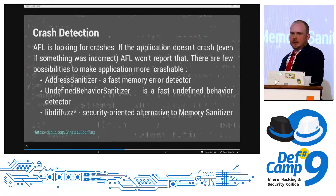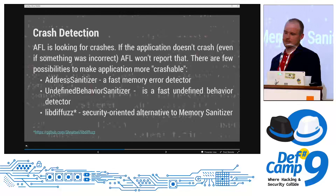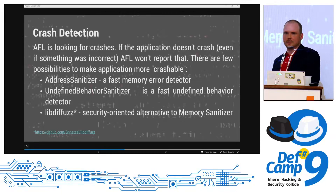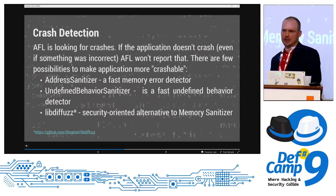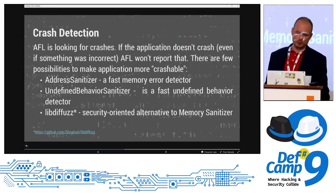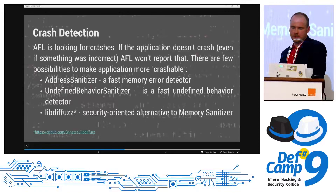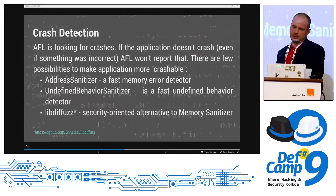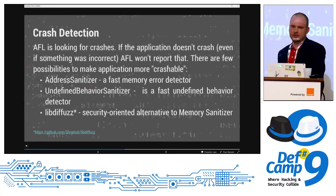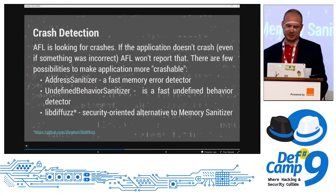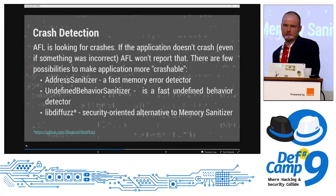The next very important part of AFL is crash detection. AFL is looking for crashes — if your application doesn't crash, AFL won't report that. But sometimes it's not so easy. When you have buffer overflows that don't cause a crash, AFL won't report it, so we need to make it more crashable than normally. One method is Address Sanitizer. It's a tool used by the Clang compiler. It adds all the checks for memory read/write, and if something's wrong, it just crashes. The trick is it works nicely, but there is a huge overhead in memory and in speed. For 64-bit applications it's not even recommended because the application compiled with Address Sanitizer is really huge.